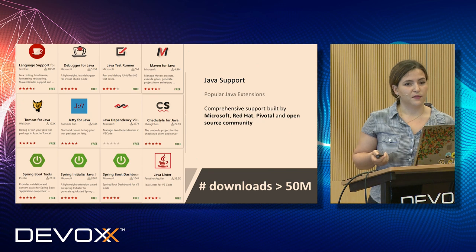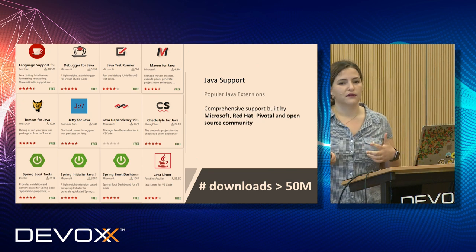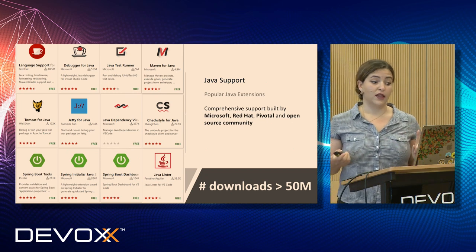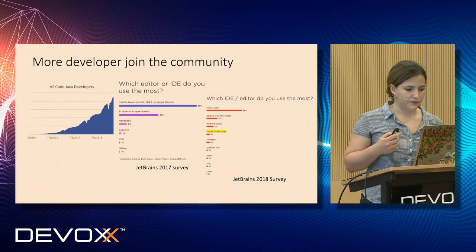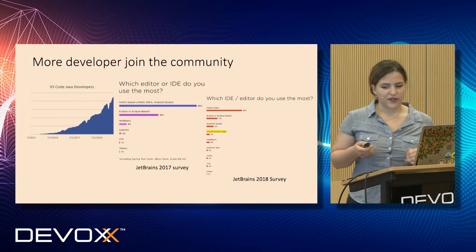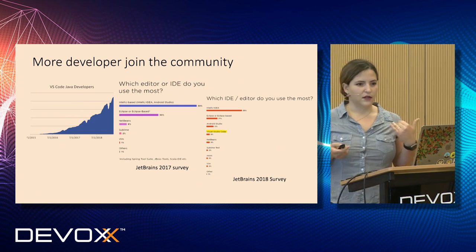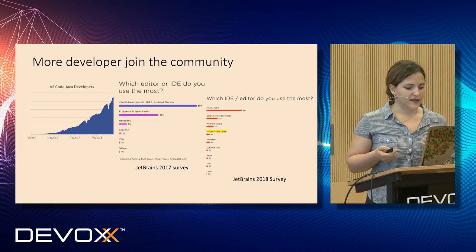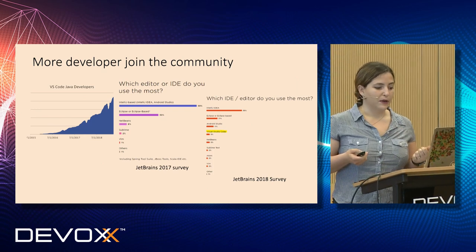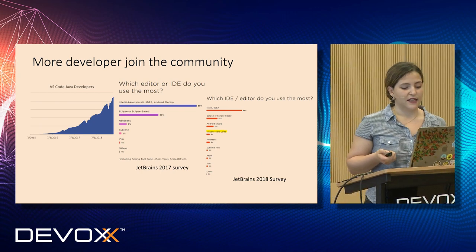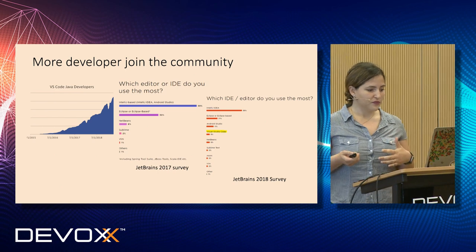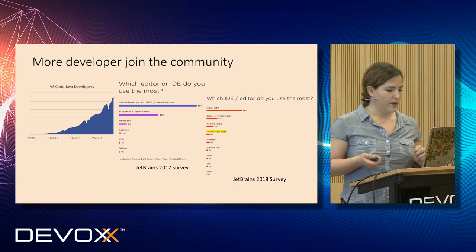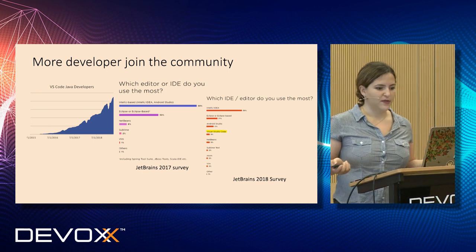Java support is wide. There are a lot of companies giving back to the VS Code ecosystem — not only Microsoft, but also Red Hat, Pivotal, and the open source community are constantly adding more plugins. This tells us people are really using it, and that they're leaning towards polyglot development rather than working in only one language. More developers are joining the community, and in the JetBrains 2018 survey, people started mentioning Visual Studio Code as an editor they use the most.